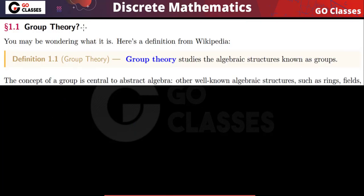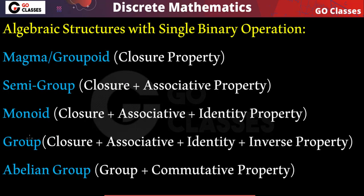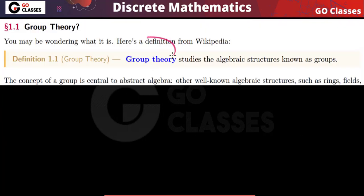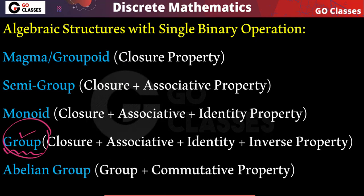What is group theory? Group theory is basically the study of the algebraic structure known as a group. This structure is extremely important, and from the next lecture onwards we will study what is a group. Group theory is the study of algebraic structures known as groups.